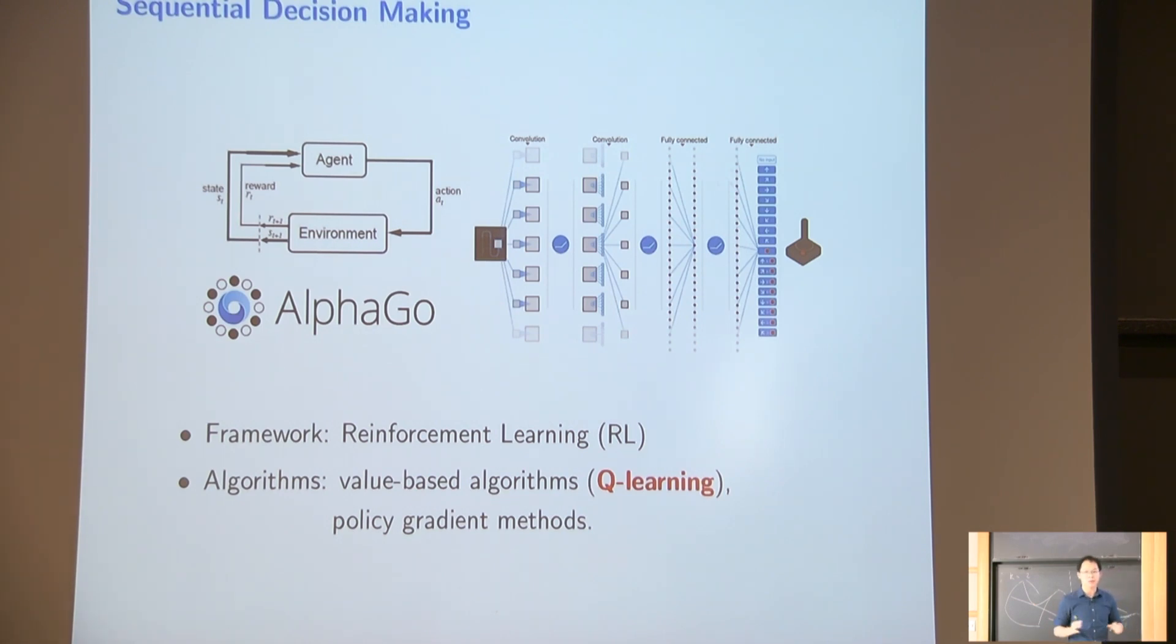And there is a lot of algorithms to do this reinforcement learning. Like the two main classes, one is value-based algorithm, including Q-learning. The second class is a policy gradient method. If you don't know value-based algorithm, policy gradient, don't worry. And you only need to remember Q-learning is an algorithm. It's not like learning framework. It's an algorithm.